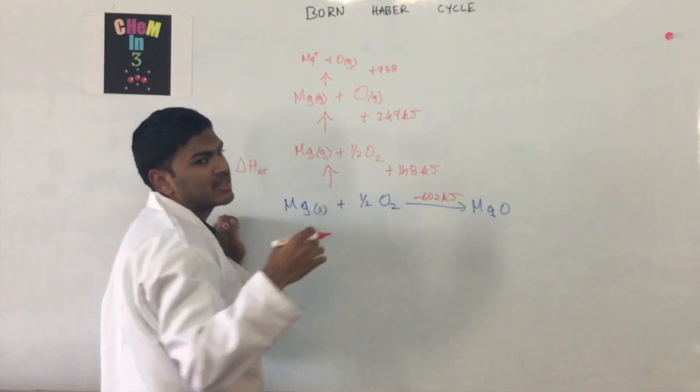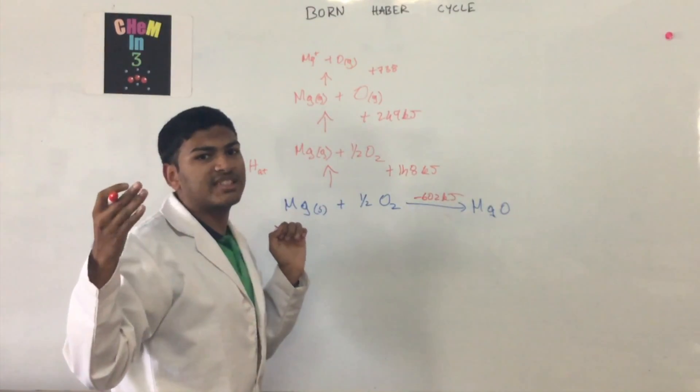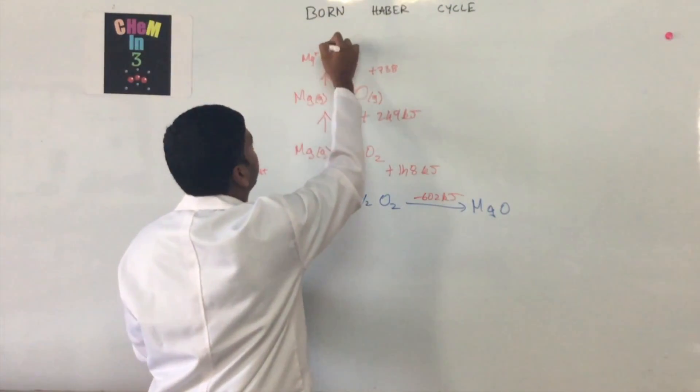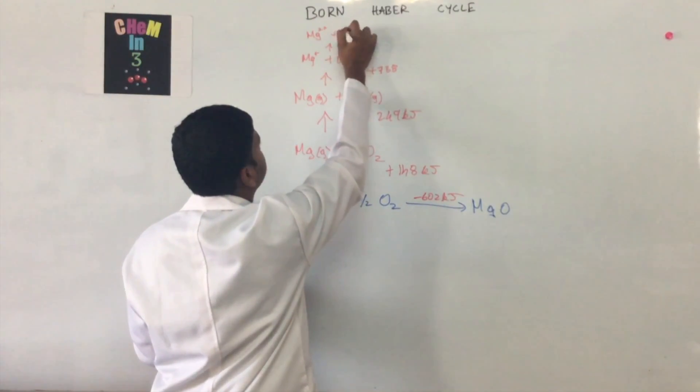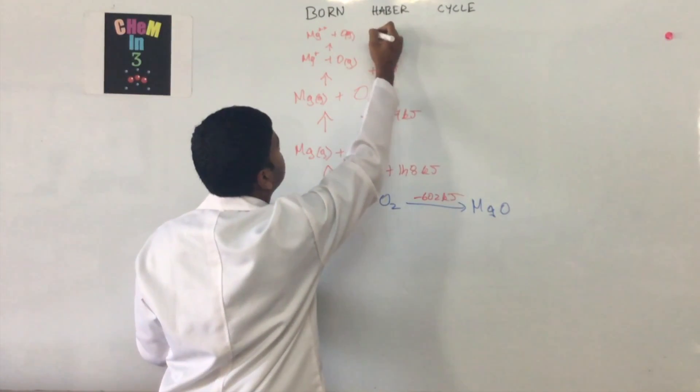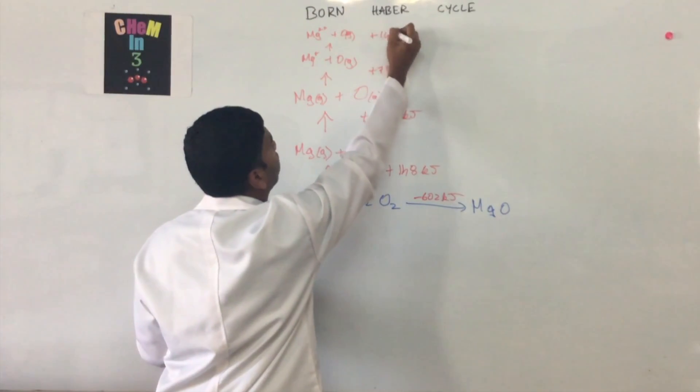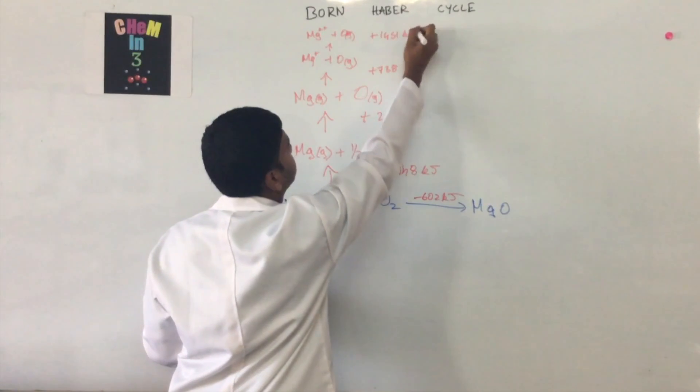And since magnesium is at its stable state at Mg2+, we do the same thing again, Mg2+ plus O(g), and this is at plus 1451 kilojoules.